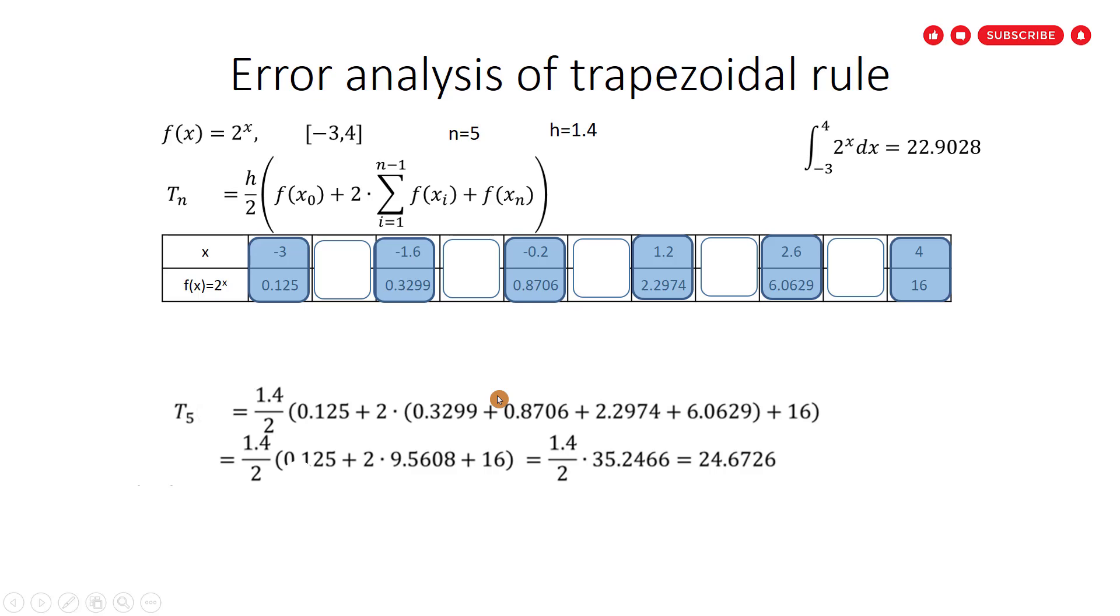Let us use the trapezoidal rule to find t_5. Just put the value of h, 1.4, over 2, multiply the first y value plus 2 multiply summation of the intermediate y values plus the last y. More simplification: it equals 1.4 over 2 multiply 0.125 plus 2 multiply the summation which is 9.5608 plus 16, and the result is 24.6726.